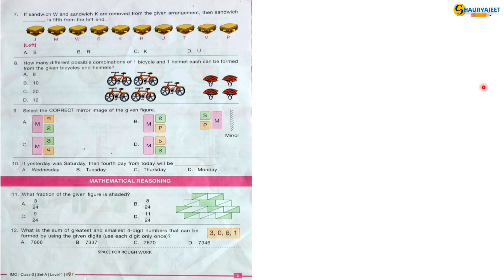Question 7: If sandwich W and sandwich K are removed from the given arrangement, which sandwich will be fifth from the left end? If we remove W and K from the arrangement, the arrangement will be J, M, S, R, U, T, V, P. So from the left side, the fifth alphabet is U. So the correct option is option D, U.